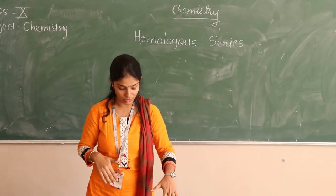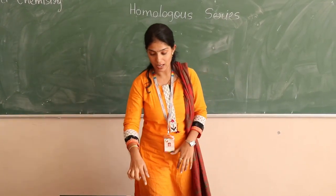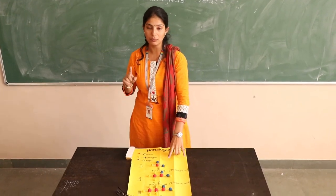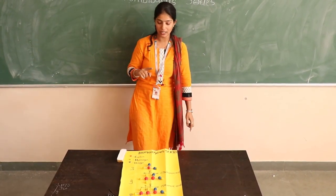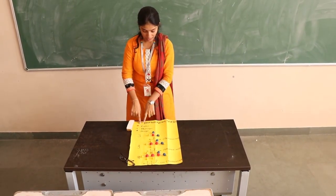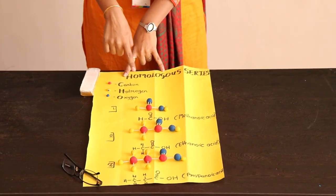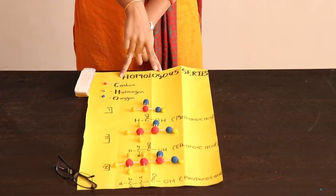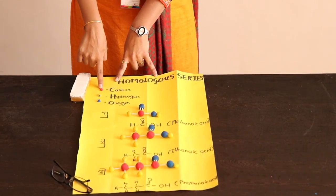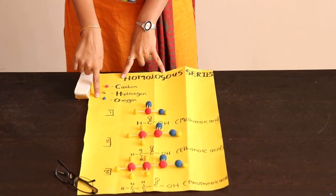Today in this homologous series, we are going to study the homologous series of acids. I have taken different clay models with different colors so that we can identify the different elements. For carbon, I have chosen the red color. For hydrogen, it's yellow. And for oxygen, it's blue.